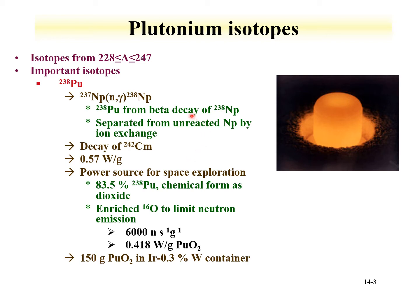Plutonium-238 is separated from the neptunium-237 target by ion exchange. You can also obtain plutonium-238 by the decay of curium-242. Since it's a relatively short-lived alpha emitter, it has a lot of energy associated with it — about half a watt per gram — so this is used as a power source for space exploration. You can make plutonium-238 oxides with up to around 84% plutonium-238, so you can have some plutonium-239 in there. As this oxide is formed, they actually enrich the oxygen in oxygen-16 to limit neutron production.